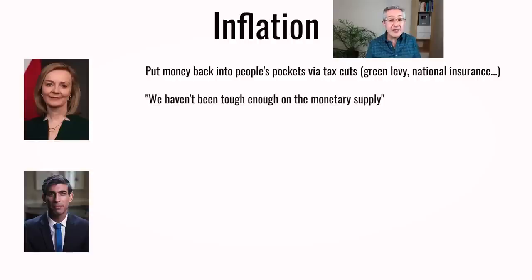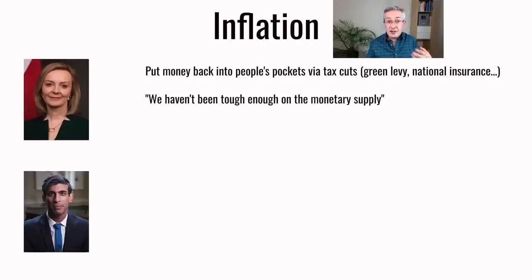What's also worrying about her inflation policy is that she's talking about monetary supply. The link between monetary supply and inflation is debated in economics — some countries which have increased their monetary supply hugely, such as Japan, have not seen inflation as a result. You could also argue that our expansionary policy during the crisis — issuing bonds and funding furlough schemes — actually stopped us from suffering a very deep recession. And if we go through a period of austerity now, I think that could worsen our economic crisis, certainly in terms of growth.